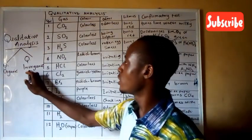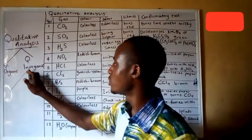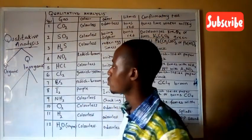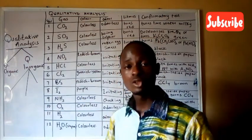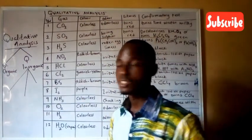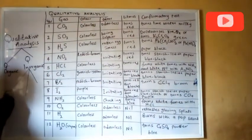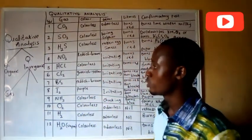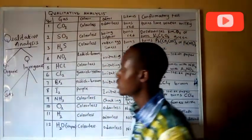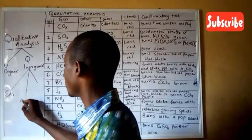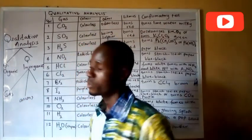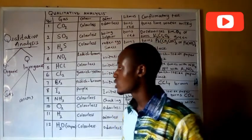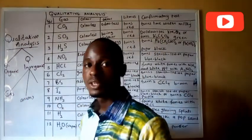Qualitative inorganic is divided into three areas. There are three things you must be able to do: the first is identification of gases, the second is identification of anions — how do you identify anions in solution — and lastly, identification of cations.